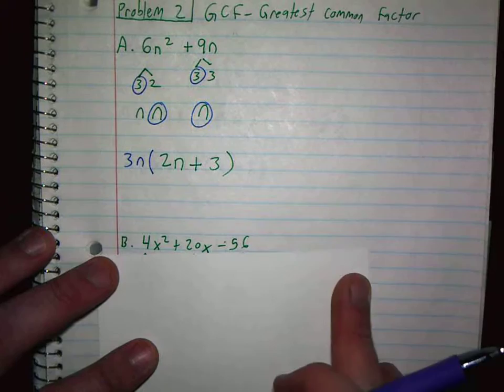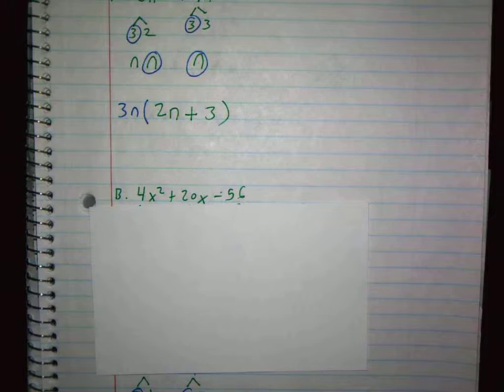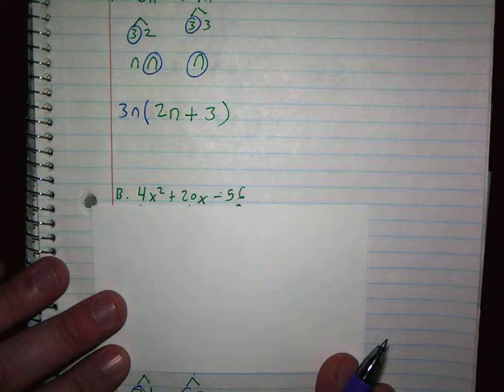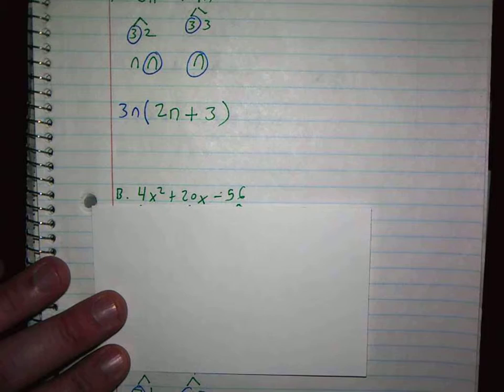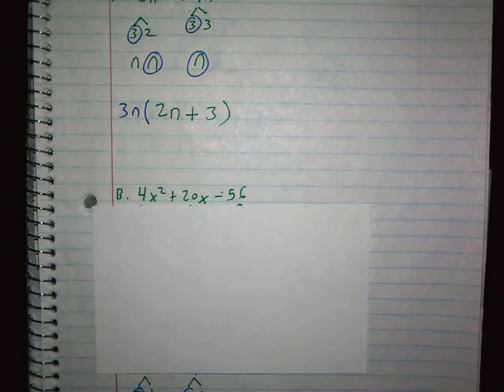The second one. This one is a trinomial, right? But I can't factor it the way I did on the last problem. Why? Why? The leading coefficient is not 1. Yeah. The leading coefficient is not 1. So many times if you can find the greatest common factor, then the leading coefficient will become 1.